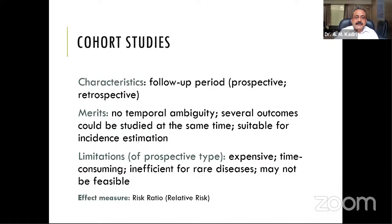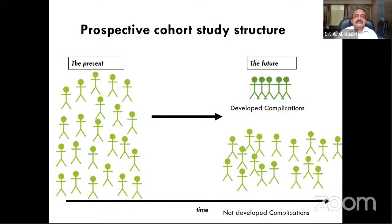Cohort studies are comparatively more costly but they eliminate temporal ambiguity — they establish a time relationship between cause and outcome. They can give several outcomes at the same time and can estimate incidence. In a cohort study, in the present we start with a group of people — no cases, no controls — and over time we observe how many develop the disease and how many do not, dividing them based on outcome.